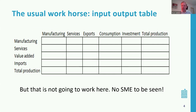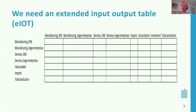In a general setting, the usual workhorse is an input-output table. You have industries, value added, imports, exports, consumption, and investment — you can see who is supplying whom with which amount. The problem is that in this diagram you can do wonderful things at the industry level, but there is no SME to be seen. So if you want to have SMEs in your analysis, you need something like an extended input-output table, where every industry has been split into an SME part and a large enterprise part.